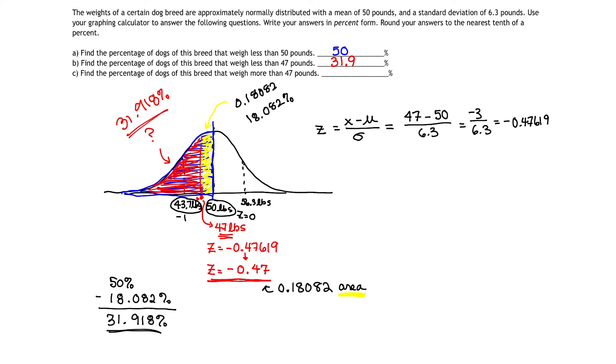Our last question. Find the percentage of dogs that weigh more than 47 pounds. Well, since the total area under my curve is 100%, if 31.9% is less than 47 pounds, that would mean if I take 100% and I subtract 31.90, that's going to tell me the total leftover that's greater than 47 pounds. So if 31.9 is on the left side of my Z score, then 68.10% is on the right side of my Z score. So that means that the percentage of dogs that weigh more than 47 pounds has to be 68.1%.